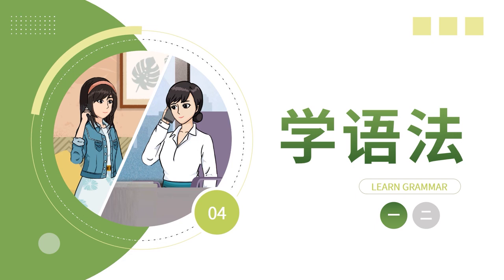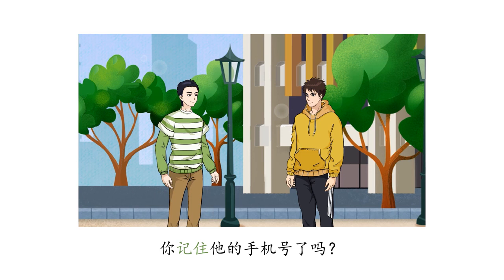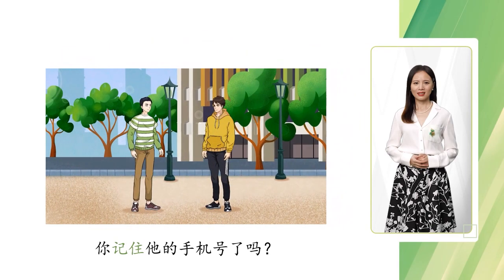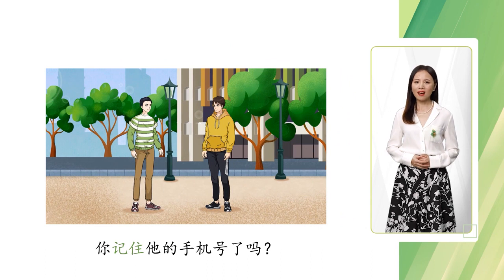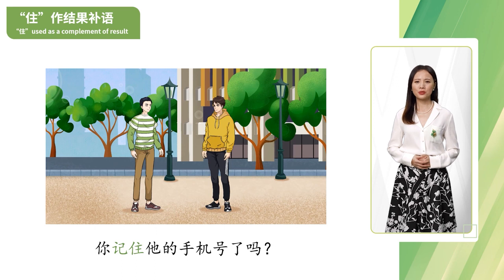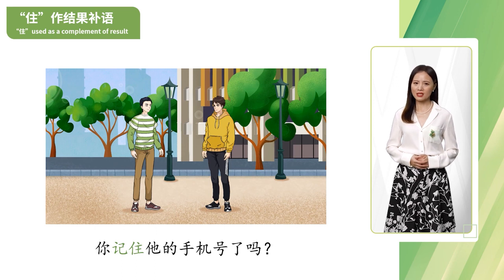Now, let's learn grammar. 你记住他的手机号了吗?我得给他打个电话。Now, let's learn 住, used as a complement of results.